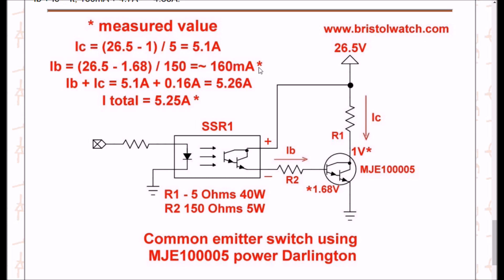All right, if I'm going to take 26.5 minus 1.68 volts, divide by 150 ohms, I'm going to get approximately 160 milliamps. That's what I actually measured. Well, 5.1 from R1 plus 160 is going to add up to 5.26 amps total.